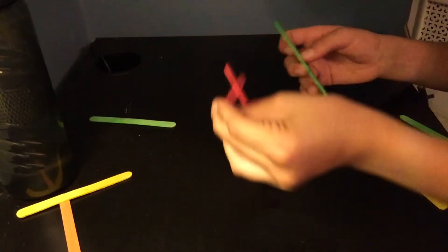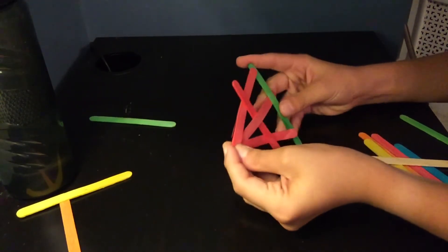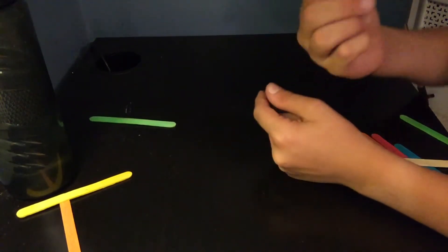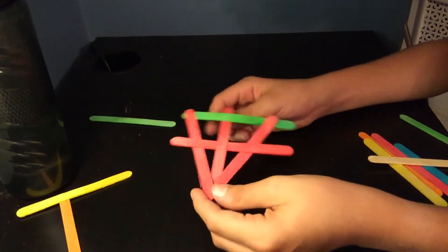And then you take another popsicle stick, you go under the first, over the second, and under the third like that. And then it stays together and on impact will break like the other one just did.